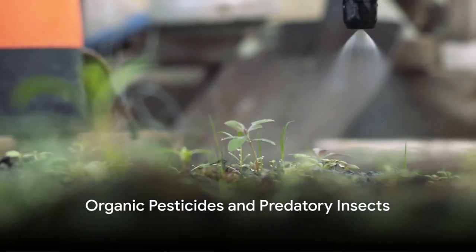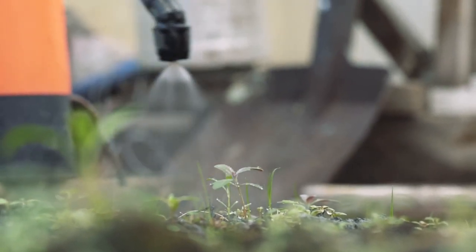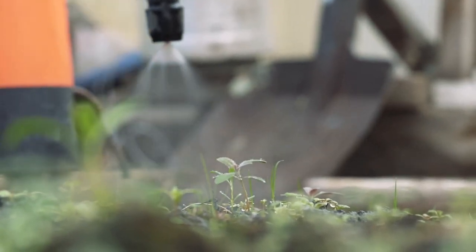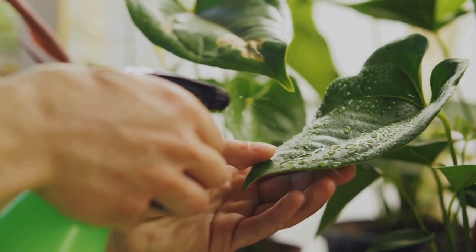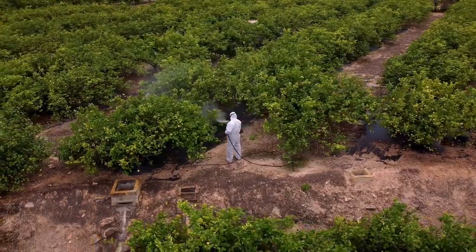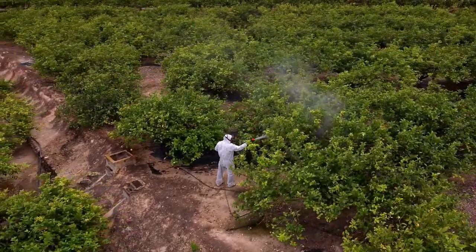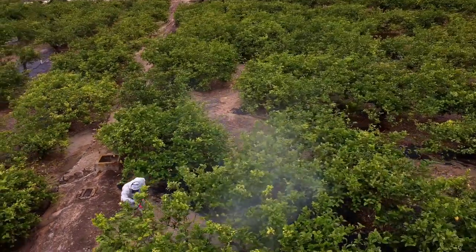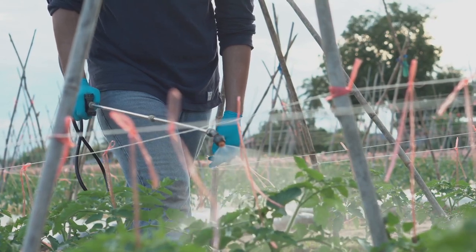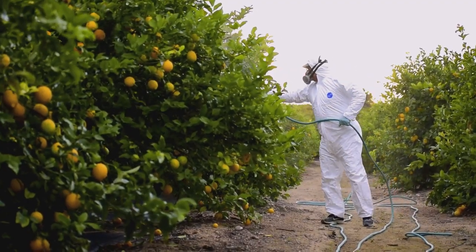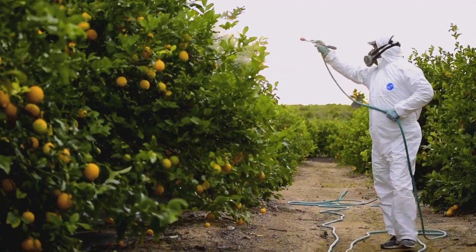If pests do manage to sneak past your defenses, it's time for treatment. Let's discuss organic pesticides and predatory insects. Organic pesticides are derived from natural sources and can be a powerful ally in your fight against pests. Neem oil is a versatile substance effective against a myriad of pests and even has fungicidal properties — it disrupts the feeding and reproductive cycles of insects, putting a stop to their destructive activities. Insecticidal soap is a gentler option, less harmful to beneficial insects, but still effective against soft-bodied pests like aphids and mites, working by penetrating their outer layers and causing dehydration. Diatomaceous earth is a natural powder made from the fossilized remains of tiny aquatic organisms that damages the exoskeleton of insects, causing them to dehydrate and die — like laying down a field of microscopic razor blades that are deadly to pests but harmless to your plants.